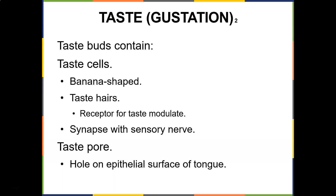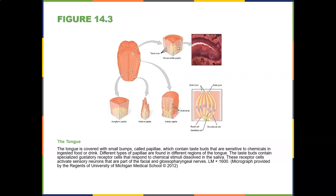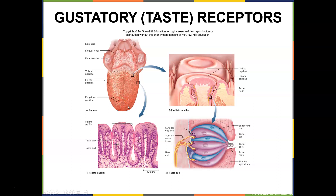Different epithelium are responsible for different tastes. There's a misconception that specific tongue areas are exclusively dedicated to one taste — most of the tongue can detect all five flavors. However, the back of the tongue has a higher proportion of bitter receptors as a protective mechanism: if you taste something potentially toxic, the body will spit it out. The taste bud structure includes supporting cells, taste pores, taste hairs, and tongue epithelium. Watch the YouTube video on how we taste.